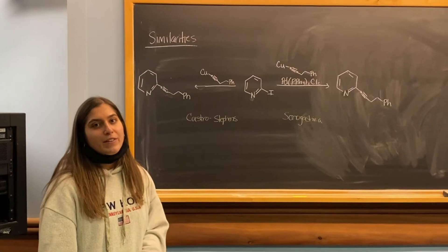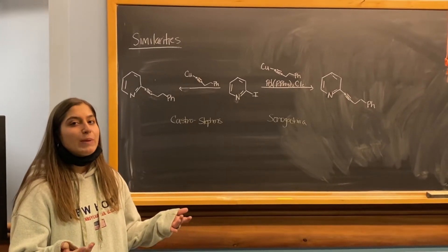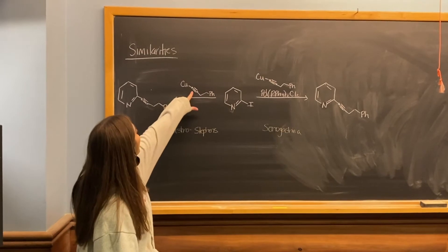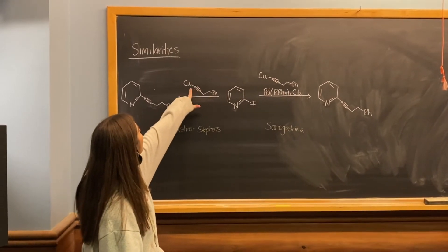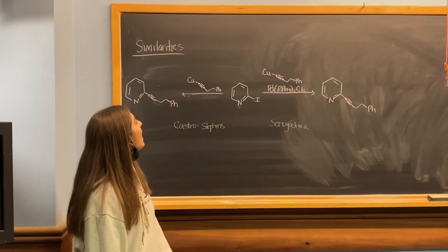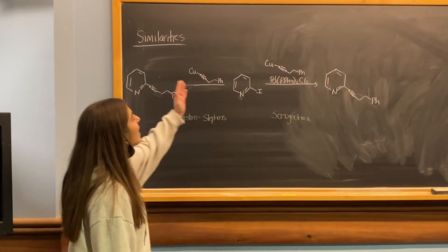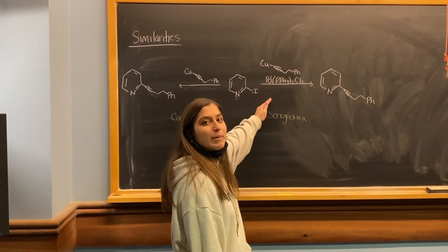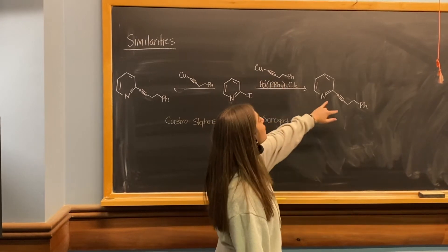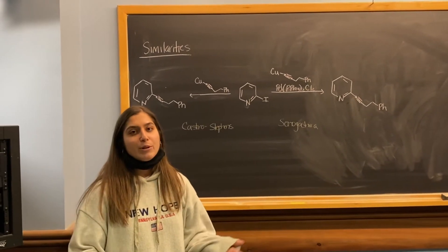Here's another example showing that even though the Castro-Stevens and Sonogashira reactions use different conditions — one with a copper catalyst and one with palladium — they can still produce the same product. In both cases, the iodide is replaced by the terminal alkyne and aryl group, forming a new carbon-carbon bond. We also get a copper halide byproduct because the iodide leaves and bonds with the copper during transmetalation. The second reaction involves transmetalation in the mechanism as well, but overall both give very similar or identical products.